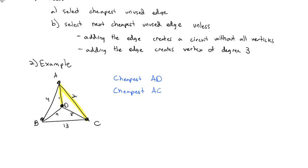Now technically the next cheapest is the 4, but I want to note that A, B would make A have degree 3. We would have 3 yellow lines coming out of A, so we can't use A, B. So our next cheapest looks like it's C, D, but the problem with C, D is you notice if I highlighted C, D, we would create a circuit that does not include B. We would have a connection A, D, C back to A. So we note C, D would make a circuit without B. So we're not going to use D, C either.